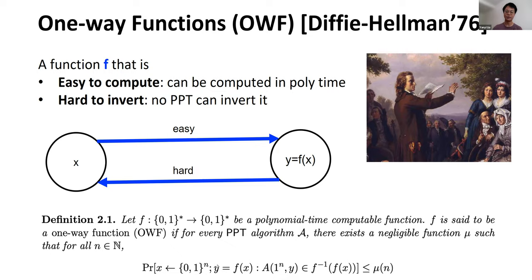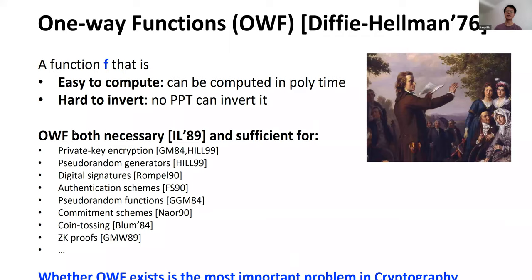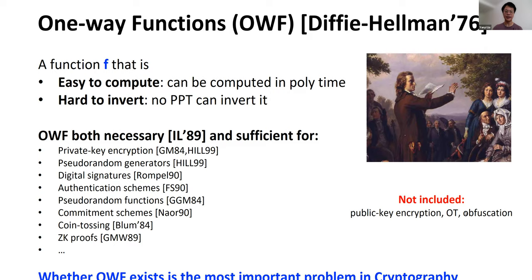The good news is that one-way functions are known to be both necessary and sufficient for a branch of private-key cryptographic primitives such as private-key encryption, pseudorandom generators, digital signatures, and so on. Although PKE, MPC, and obfuscation are not included, whether one-way functions exist is the most important problem in cryptography.